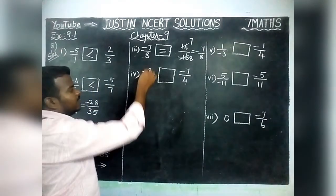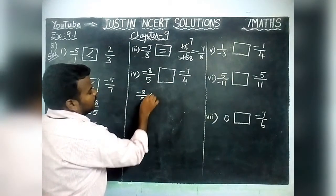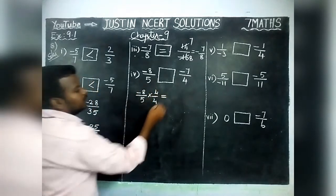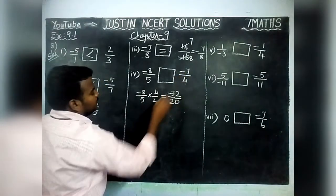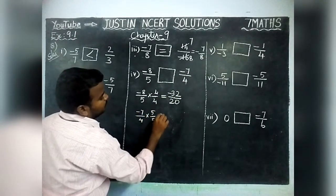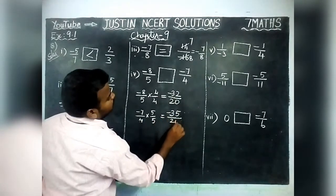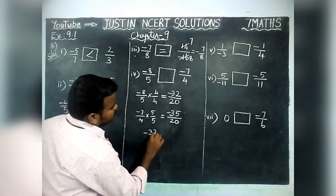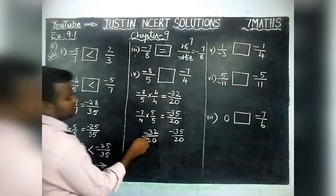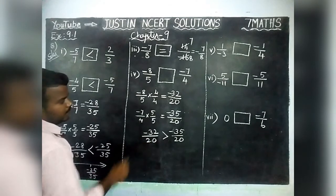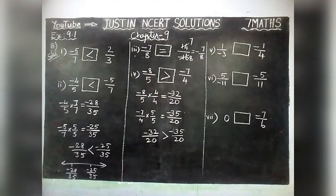Fourth question: minus 8 by 5 and minus 7 by 4. Denominators are different, so we convert into equal denominators. Minus 8 by 5 multiplied by 4 by 4 equals minus 32 by 20. Minus 7 by 4 multiplied by 5 by 5 equals minus 35 by 20. Now denominators are equal. Comparing: minus 32 by 20 and minus 35 by 20 — with negative signs, minus 32 is the greatest value. Therefore, minus 8 by 5 is greater than minus 7 by 4.